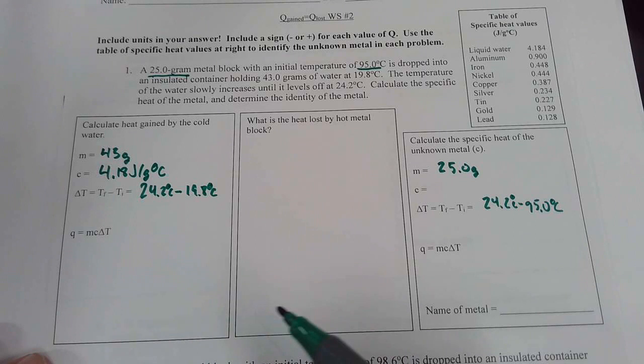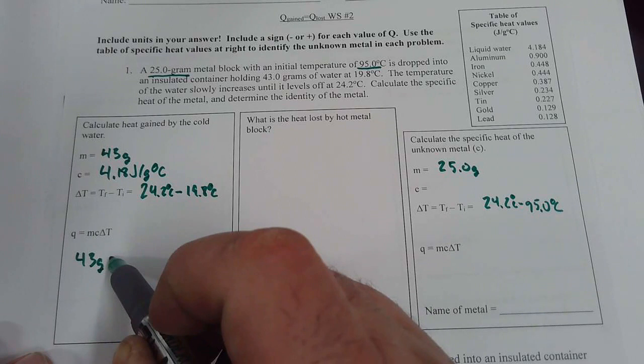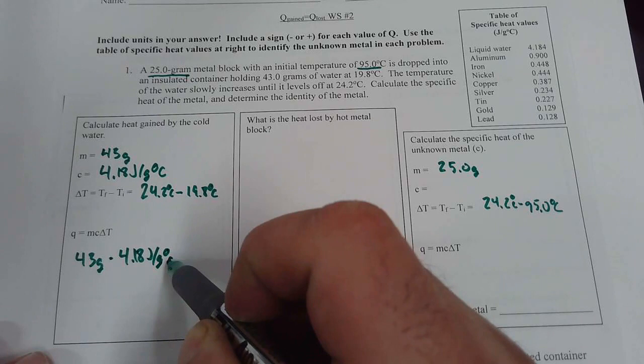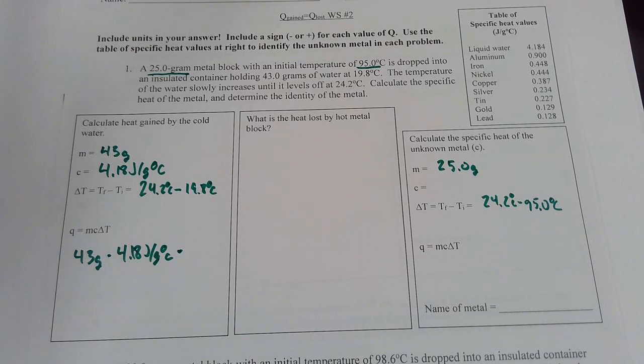So our mass is 43 grams. Our specific heat is 4.18 joules per gram degrees Celsius. And our delta T is 24.2 minus 19.8.